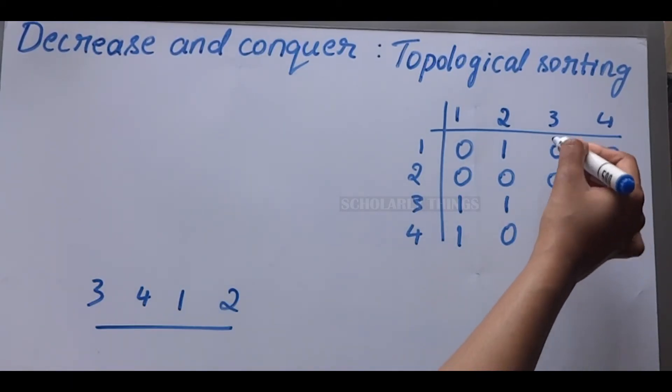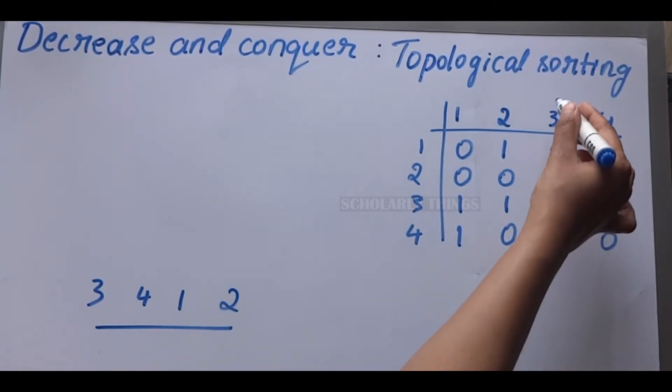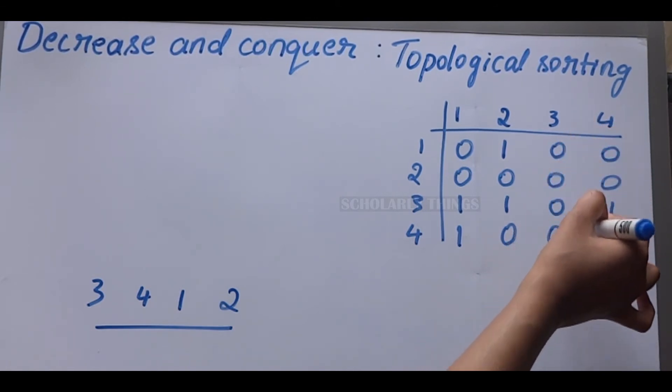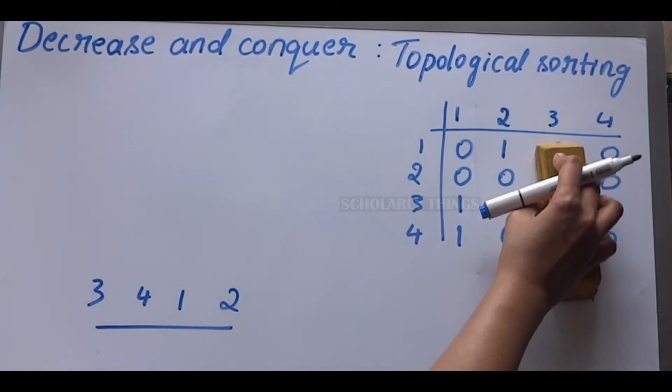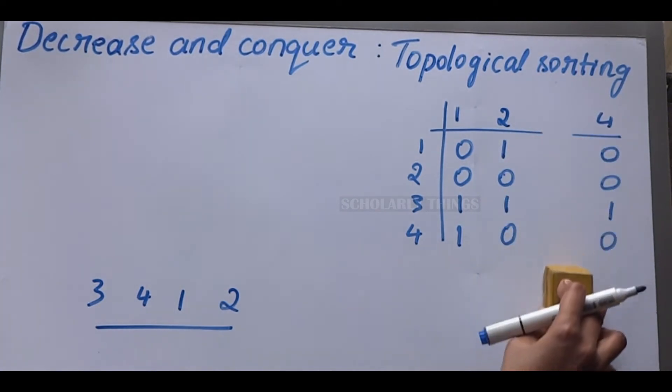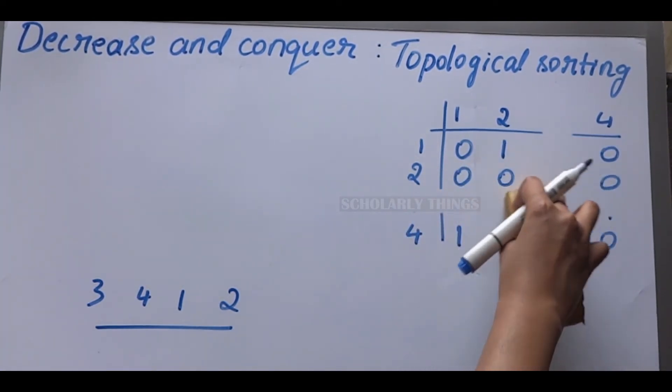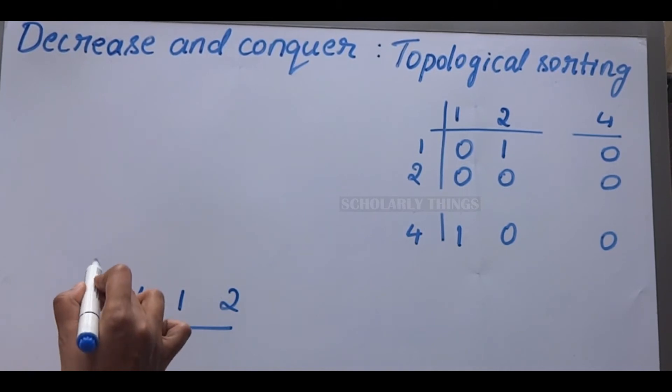Here we can see the sum of elements in column 3 is 0. Remove that column and corresponding row. That is the first element.